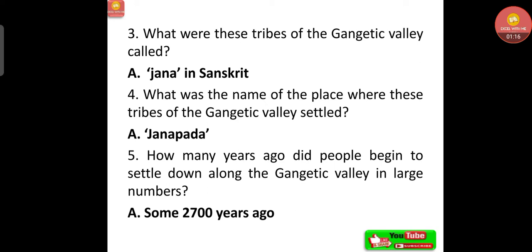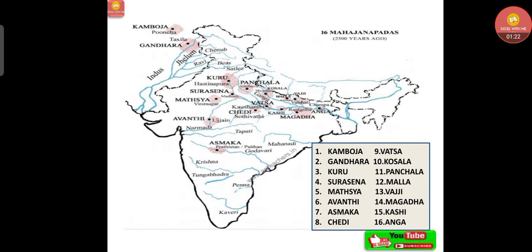People began to settle down along the Gangetic Valley in large numbers some 2,700 years ago. Now the 16 Mahajanapadas are very important, spread all over India. These were: Kamboja, Gandhara, Kuru, Surasena, Matsya, Avanti, Asmaka, Chedi, Vatsa, Kosala, Panchala, Malla, Vajji, Magadha, Kashi, and Anga.